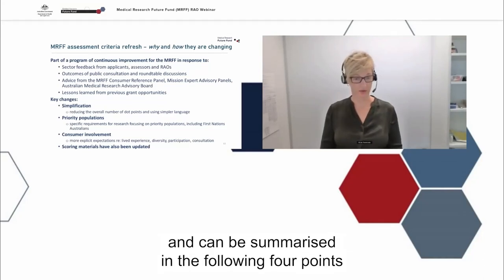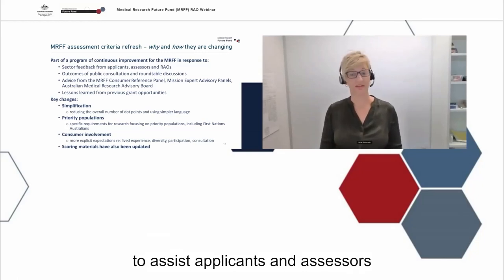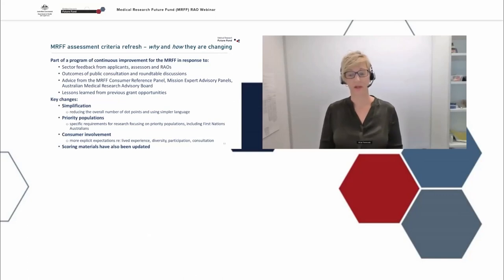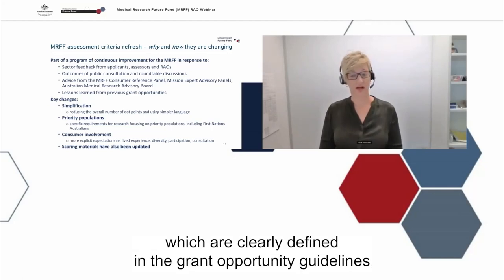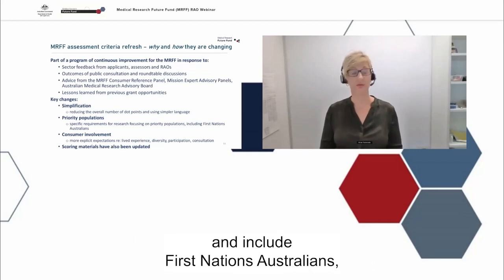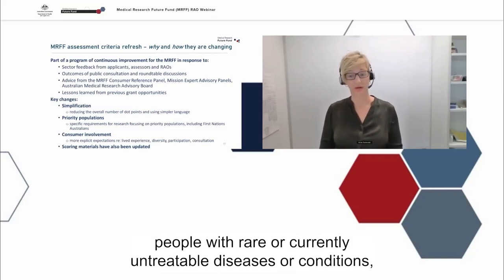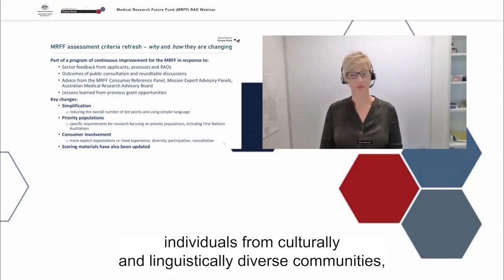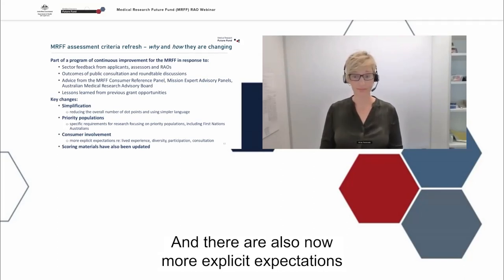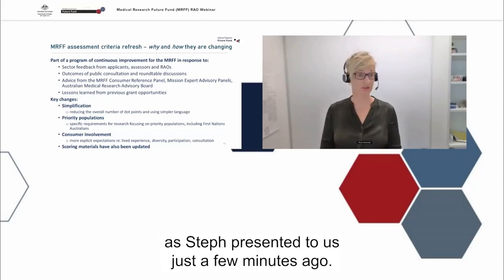The key changes to the assessment criteria descriptors can be summarised in four points. First, streamlining and simplification of language to assist applicants and assessors. Second, integrating specific expectations for research that focuses on priority populations, which are clearly defined in the grant opportunity guidelines and include First Nations Australians, older people experiencing diseases of ageing, people with rare or currently untreatable diseases or conditions, people in remote and rural communities, people with a disability, individuals from culturally and linguistically diverse communities, LGBTIQ+ people and youth. Third, more explicit expectations for consumer involvement across the life of the grant.